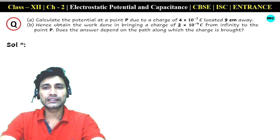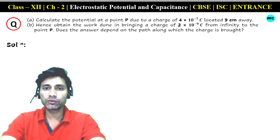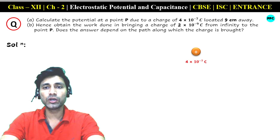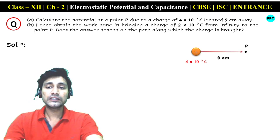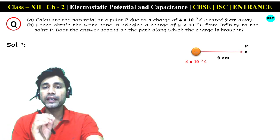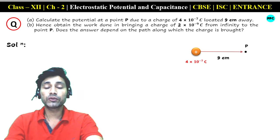So students, there are three sections, three questions asked here. We will discuss them one by one. The first part asks: if there is a point charge of 4 × 10⁻⁷ coulomb, and there is a point P which is 9 cm away, we need to find the electrostatic potential at point P.